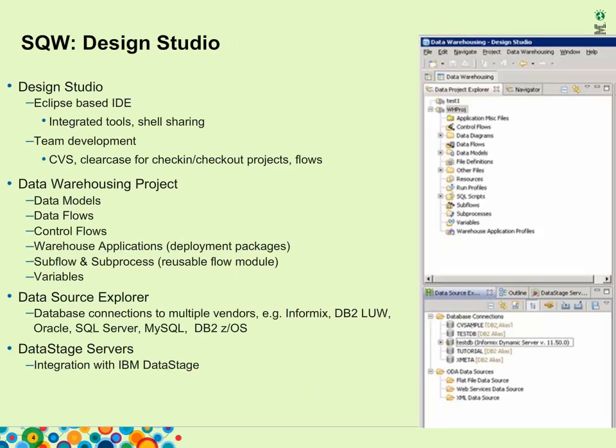For BIRT reporting, we added a perspective called Data Warehousing. To work with SqW, the user needs to create a data warehousing project which is associated with the data warehousing perspective. A data warehouse project includes data flows, control flows, data models, deployment package for admin console deployment, subflows and subprocess variable definitions. Inside the data warehousing perspective, there is a view called Data Source Explorer, where database connections are created. SqW supports connections to multiple vendors in different remote and local databases.